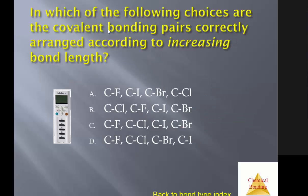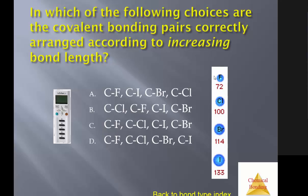In which of the following choices are the covalent bonding pairs correctly arranged according to increasing bond length? The shortest bond length at the beginning at the far left of this list. And the longest bond length at the right. I'll give you a couple seconds again. Okay. We're again revisiting this issue of the size of the atoms affecting the bond. And so, as you can see, the fluorine atom is the smallest in this series of halogens. And so, it's able to get closer to the carbon. And then it will have the shortest bond length. The answer is D.